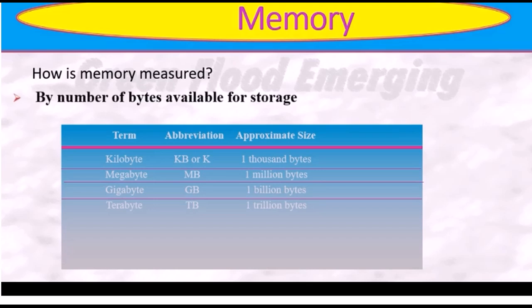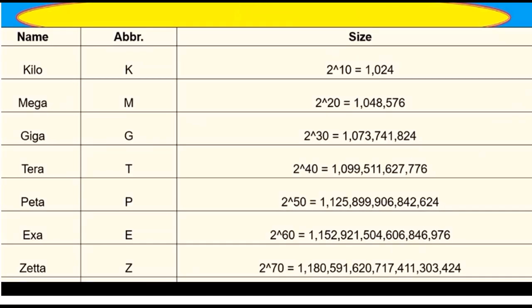How is memory measured? Memory is measured in kilobytes, megabytes, gigabytes, and terabytes — referring to the number of bytes available for storage. A kilobyte is almost 1,024 bytes. Kilo means approximately 1,000, and memory units scale up from there through megabytes, gigabytes, and terabytes.